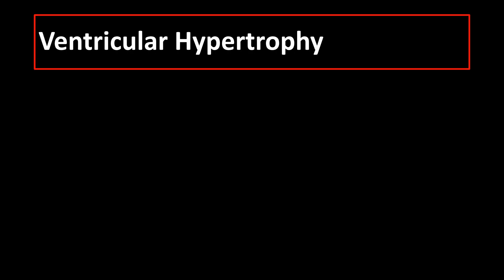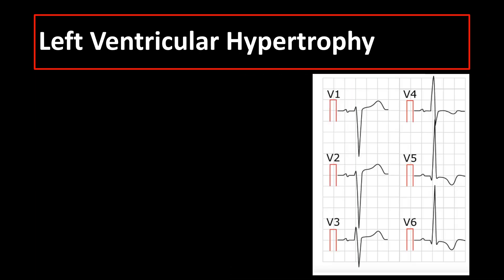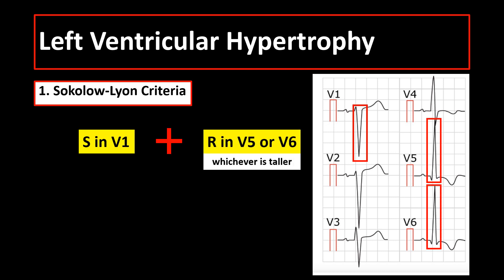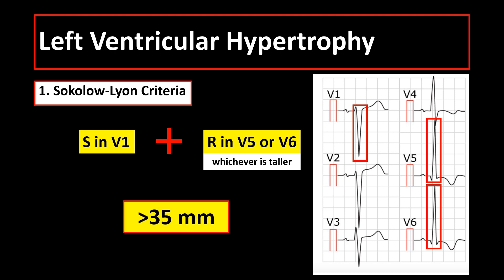Our next topic is ventricular hypertrophy. When we look for ventricular hypertrophy on surface ECG, we check the QRS complexes. For left ventricular hypertrophy, we have several sets of criteria. First is the Sokolow-Lyon criteria, which is the sum of the amplitude of the S wave — the negative deflection in V1 in millimeters — plus the amplitude of the R wave — the positive deflection in V5 or V6 in millimeters, whichever is taller — is more than 35 millimeters. This criteria is similar for both male and female patients.